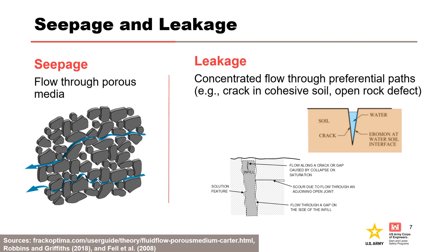Seepage describes flow through a porous media, for example, flow through the void space of a coarse-grained soil, whereas leakage describes concentrated flow through preferential open pathways. These open pathways or defects can occur in soil as a crack, gap, or hydraulic fracture, or in rock as an open joint, seam, fault, shear zone, bedding plane, solution feature, or other discontinuity.